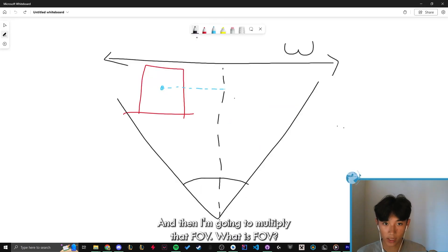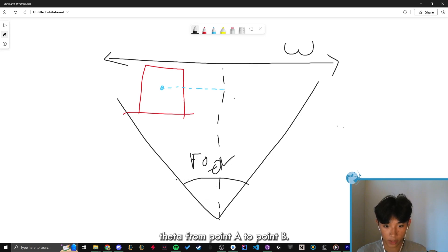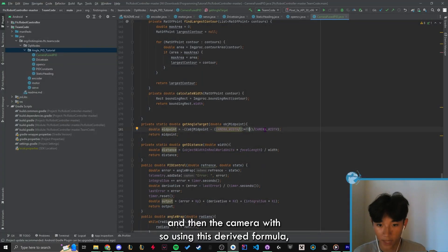And then we're going to multiply the FOV. What is FOV? This is the FOV. It is this theta from point A to point B, so the min to the max of how far it can see in terms of angle, and then the camera width.